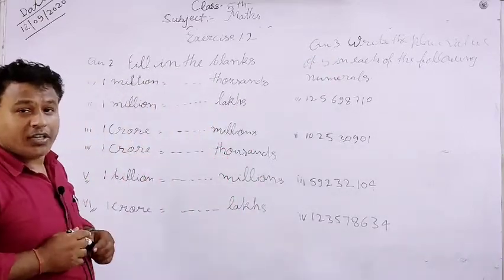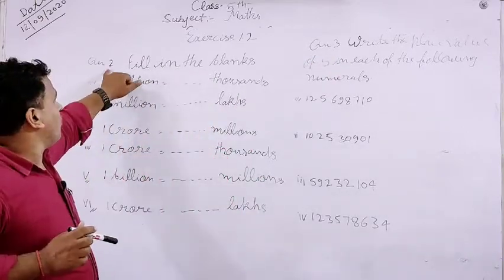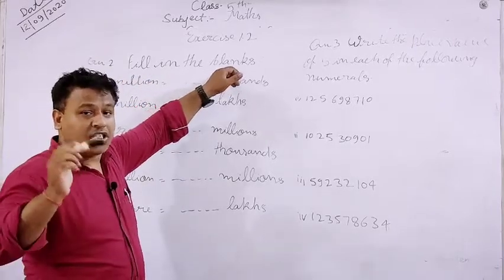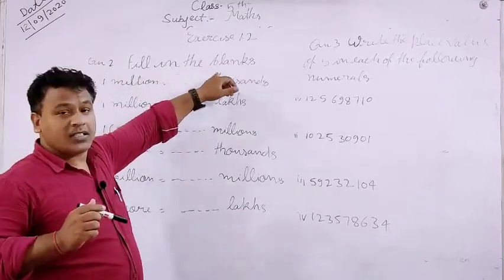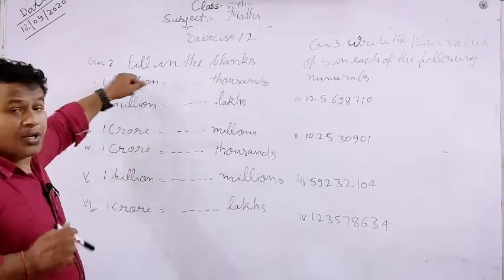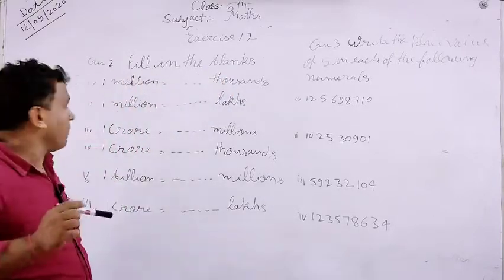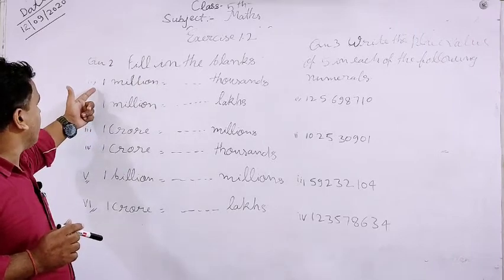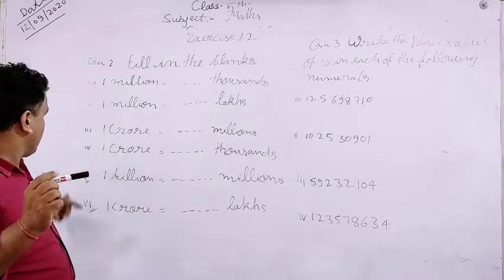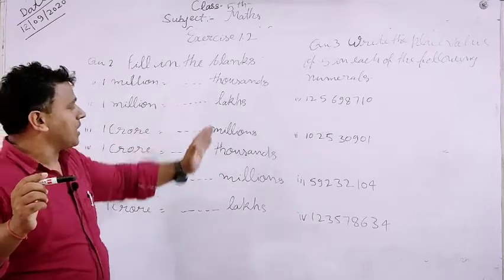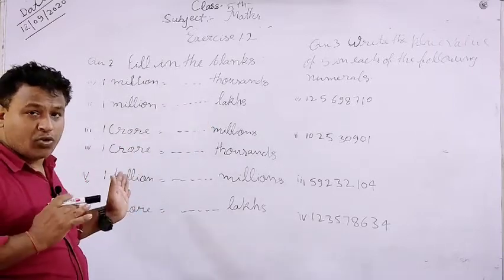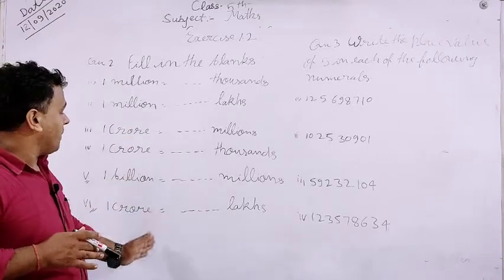Now look in your book — Question Number 2 is 'Fill in the Blanks'. Apne book mein aap dekhenge, fill in the blanks jo ki Question Number 2 hai. Yahan pe aapko 1 se lekar 6 tak — one to six fill in the blanks diye gaye hain. Ab hum aapko rules batayenge, uske according aap is blank space ko fill up kar denge.